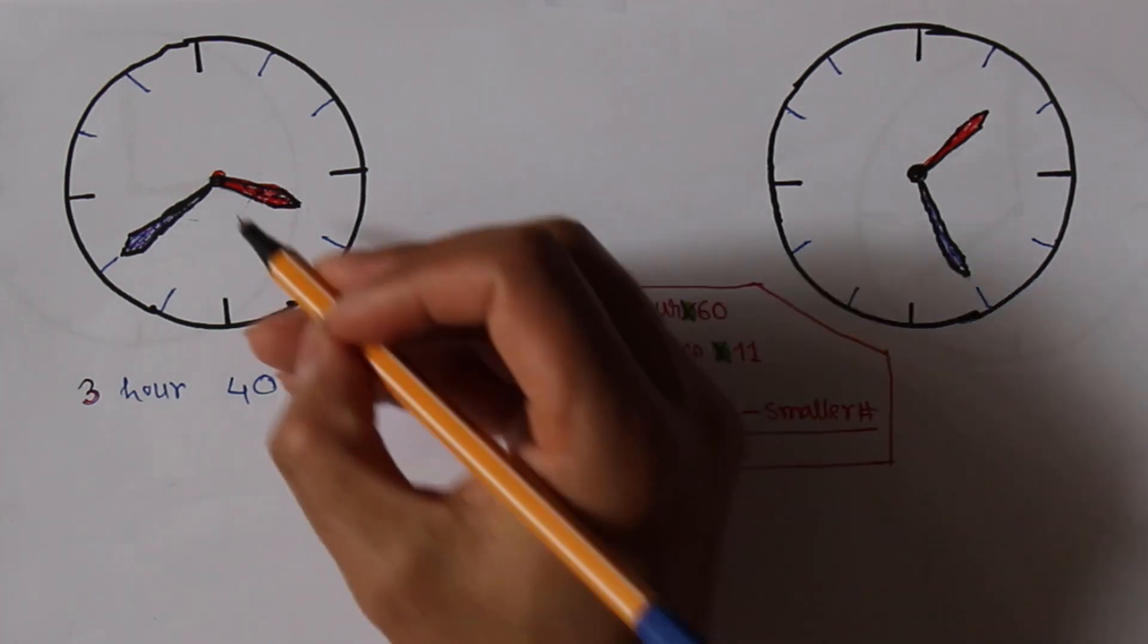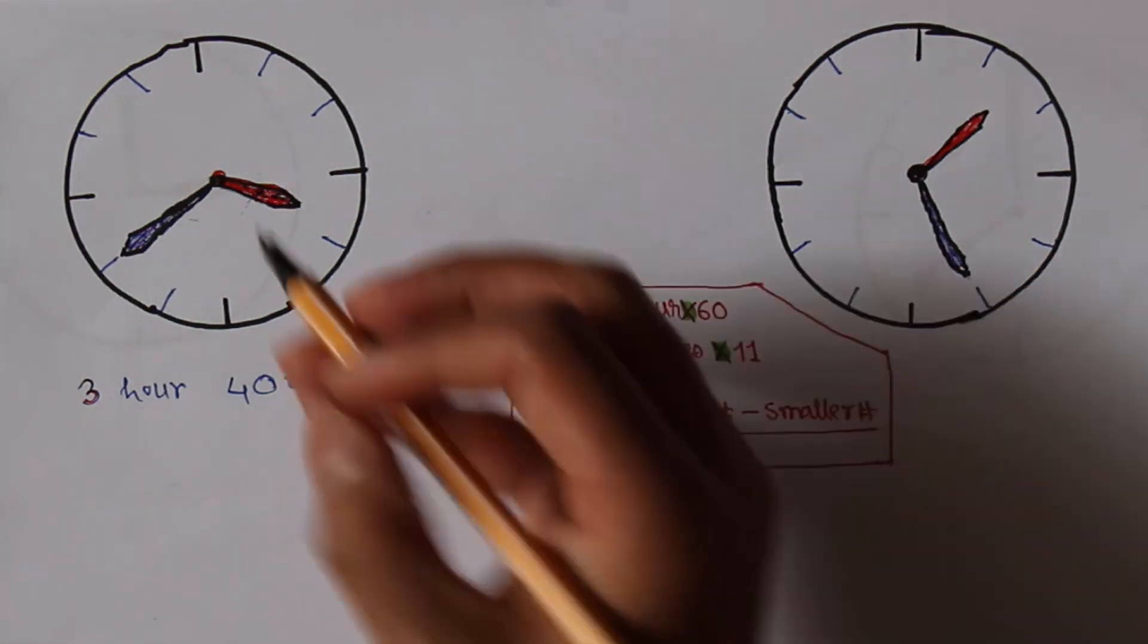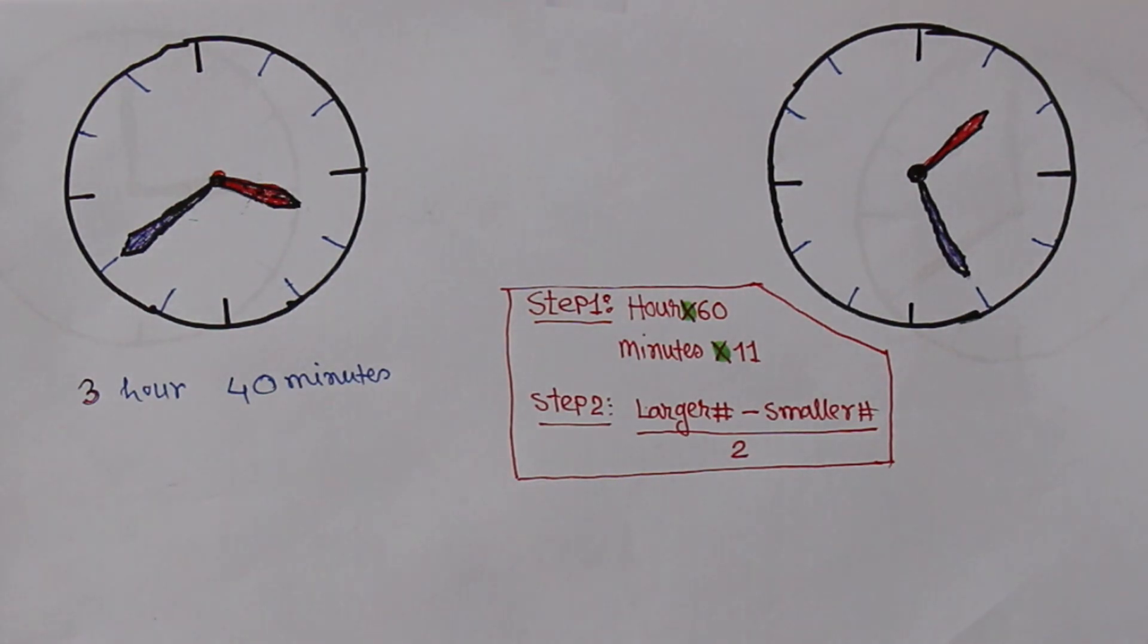If you know the trick, you can find out the angle between these two hands within 10 seconds. Yes, within 10 seconds I will show you how to calculate the angle between these two arms. I am Roby, an educator and filmmaker. If you enjoy it, sit tightly and enjoy.